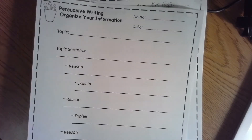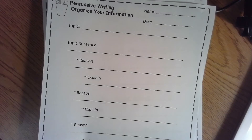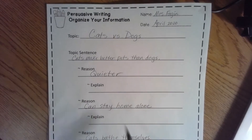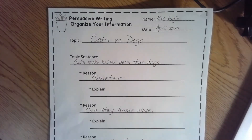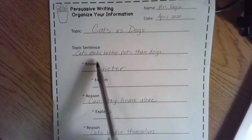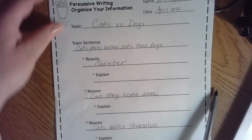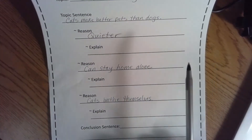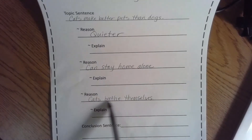In this opinion persuasive paragraph, I am going to try to convince my readers that a cat makes a better pet than a dog. My topic — remember this is just a working title — is going to be cats versus dogs. My topic sentence is: cats make better pets than dogs. And I came up with three reasons: they're quieter, they can stay home alone, and cats bathe themselves.